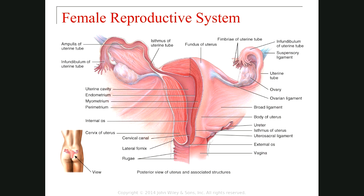This is the anterior view of the female reproductive system. You can see these two ovaries on both sides, right and left. After that, you can see this tube, which is the oviduct. This oviduct has different parts. The first part is called infundibulum, and the infundibulum has many finger-like projections called fimbriae. After that we have the longest part of the oviduct, called ampulla. And the last part of the oviduct, which has a thick wall, is called isthmus.